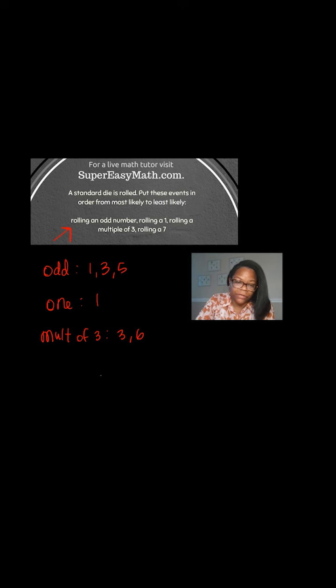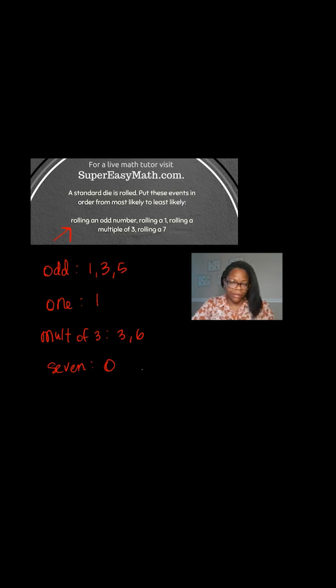The last one is rolling a seven, and that would be zero because there is no seven on a die. So it doesn't matter how many times you roll, you're never going to get a seven.